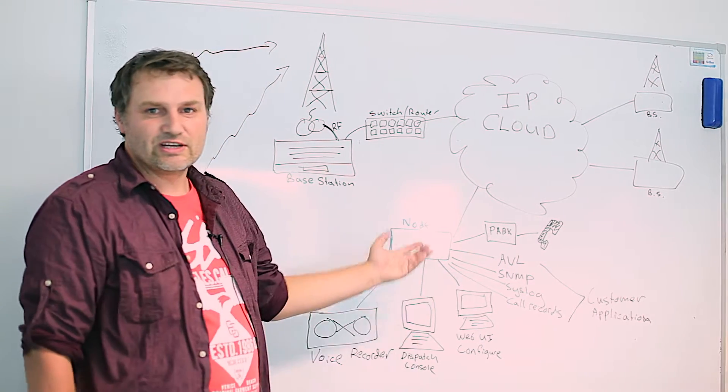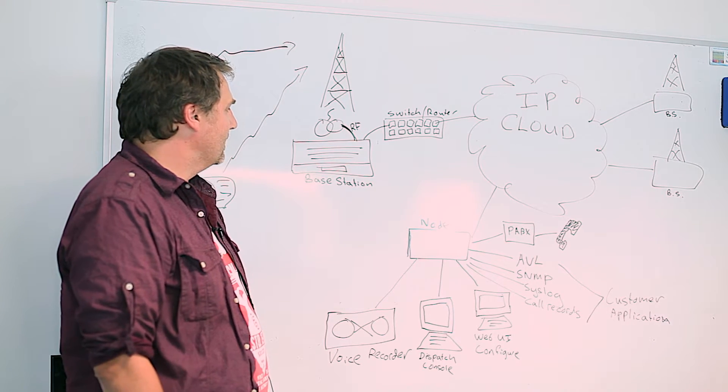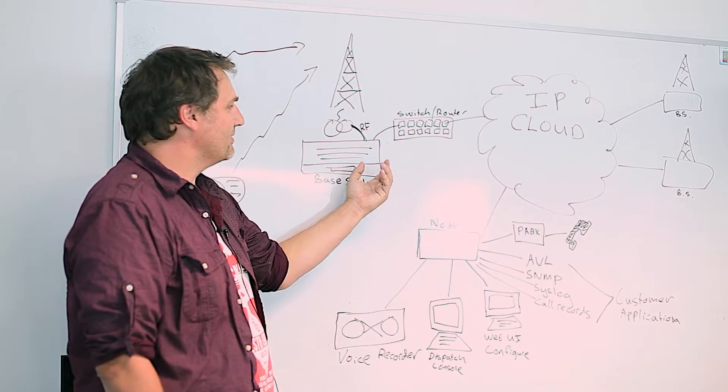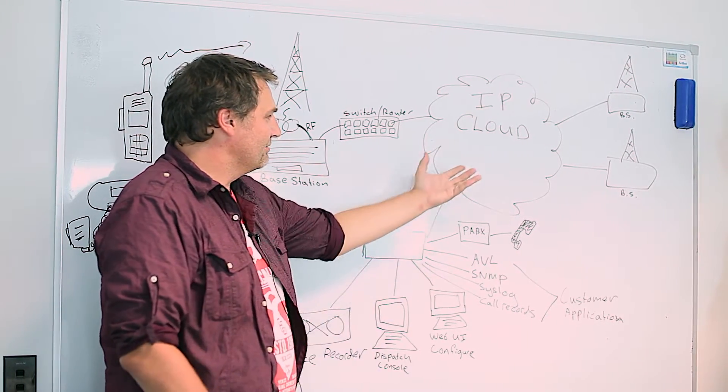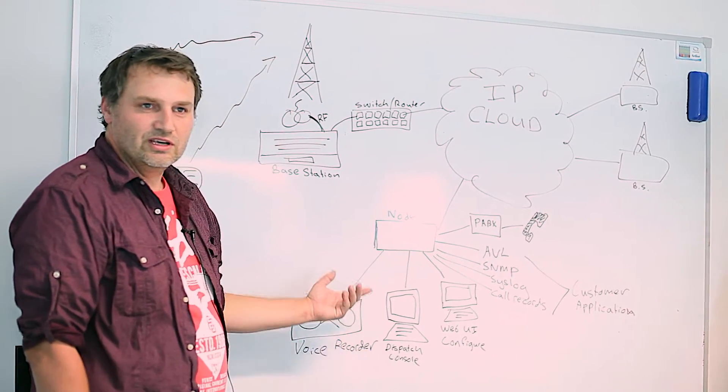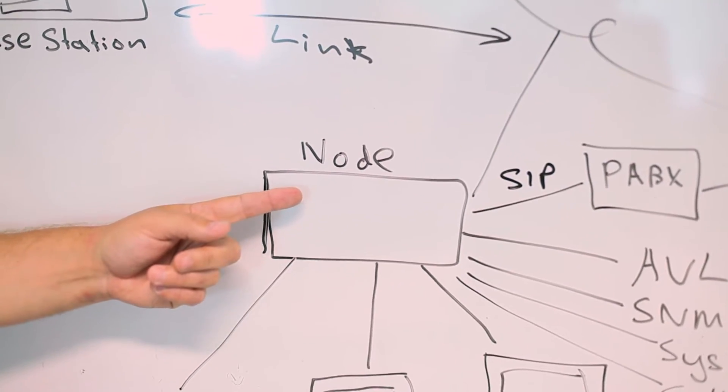Now, with Tier 2, this is just like Tier 3. Everything's connected using IP. So audio comes in into the base station, gets converted into packets and they get sent via IP through to the rest of the system. Now, in our Tier 2 solution, we have provided a node which does lots of clever stuff.